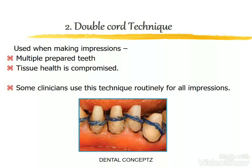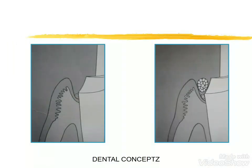The double cord technique is used when making impressions in cases of multiple prepared teeth or when tissue health is compromised. In this case, first a thinner grade retraction cord is placed, and over that a thick retraction cord is placed to achieve gingival retraction.